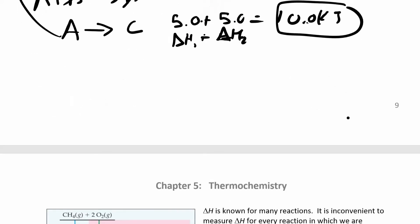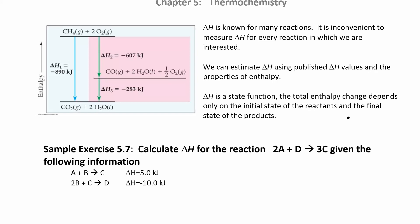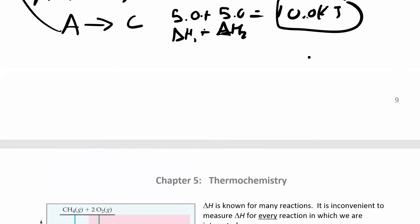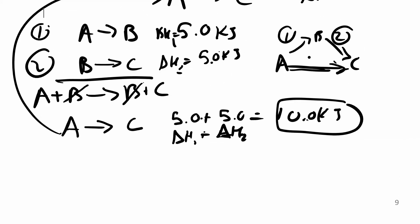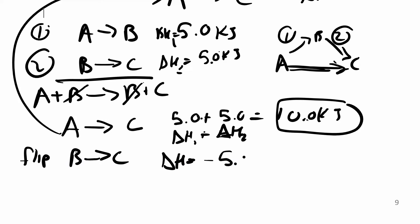That's all Hess's Law is saying — it's a state function, pathway independent, so you can just add up all the little pieces. Delta H is known for many reactions, so you don't have to measure it for every single reaction. There are a couple of tricks: if A to B is 5 kilojoules and it's endothermic, if something is endothermic in one direction it's exothermic in the opposite direction. So if I flip that reaction around, all I have to do is change the sign of delta H — now I have negative 5 kilojoules.